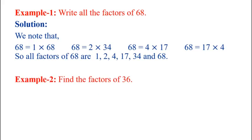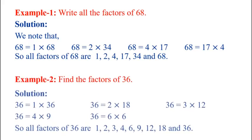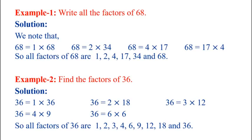Example 2: Find the factors of 36. Solution: 36 can be written as 1×36, or 2×18, or 3×12, or 4×9, or 6×6. So, all factors of 36 are 1, 2, 3, 4, 6, 9, 12, 18 and 36.